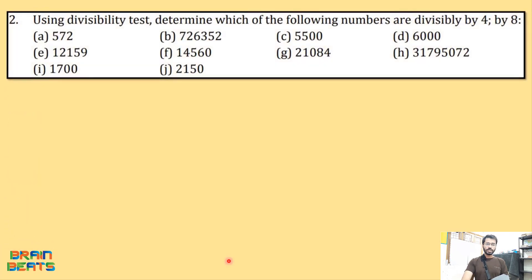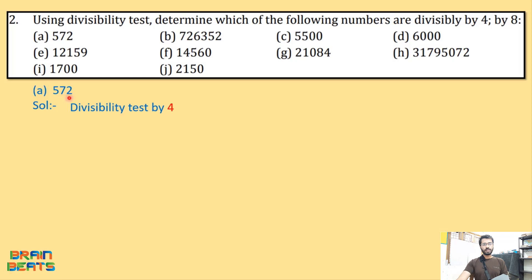Moving to the next question: using the divisibility test, determine which of the following numbers are divisible by 4 and by 8. We start with question (a), which is 572. To check divisibility by 4, we take only the last two digits of the number — that is, the tens and ones place. For 572, the last two digits are 72.